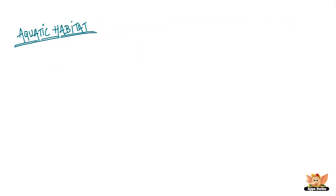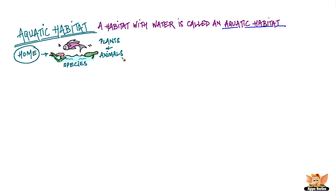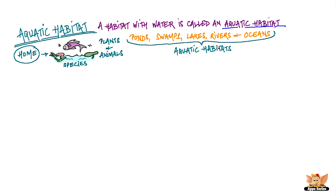Aquatic habitat. A habitat with water is called an aquatic habitat. It is home to many species of plants and animals. Ponds, swamps, lakes, rivers, and oceans are some examples of aquatic habitats.